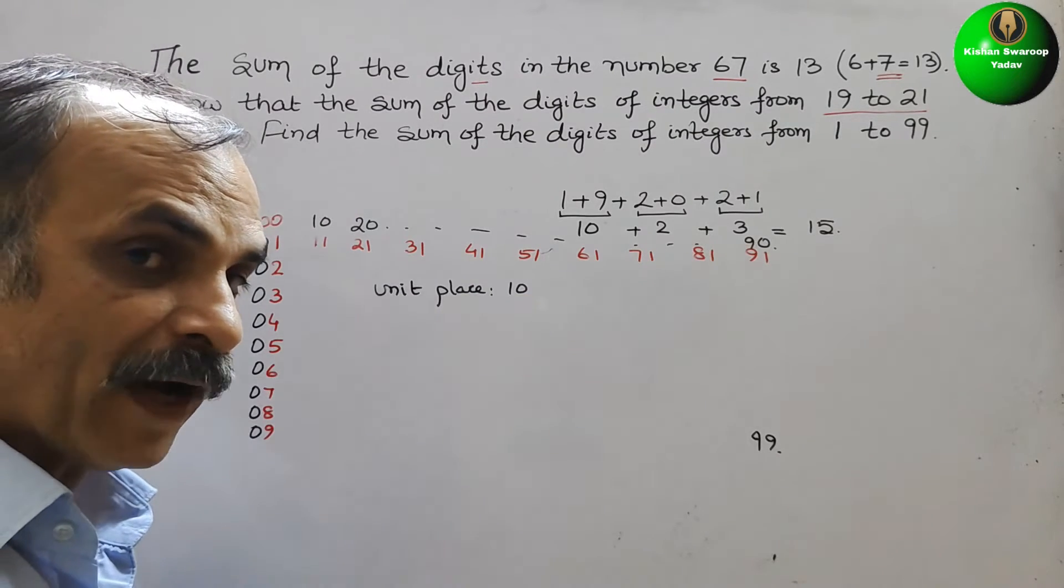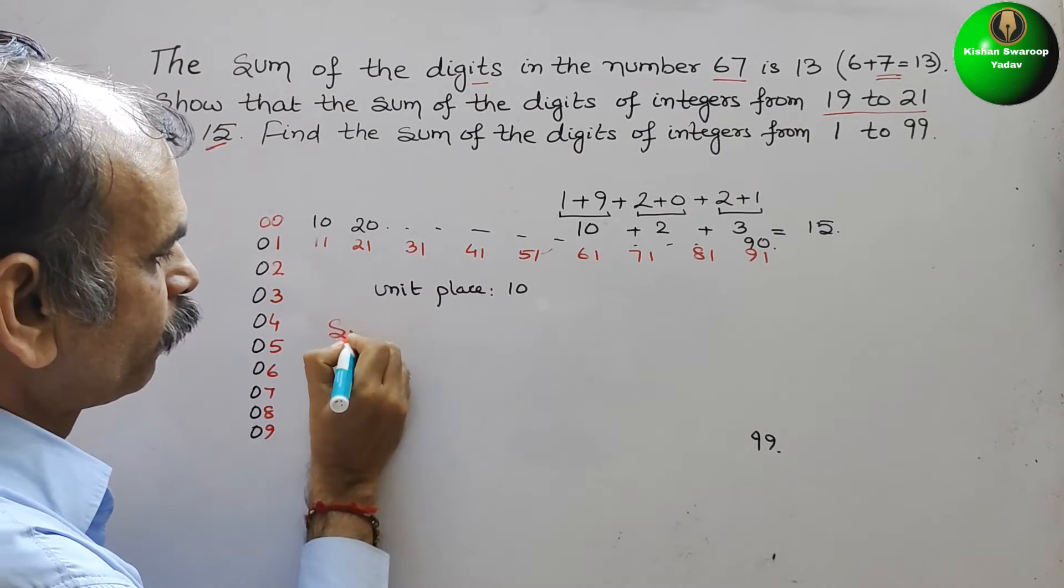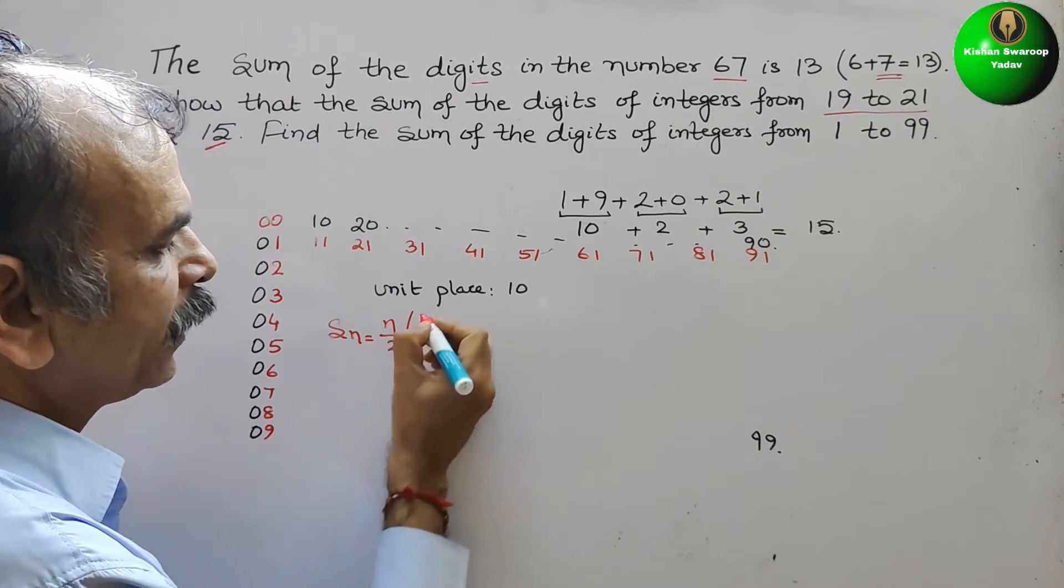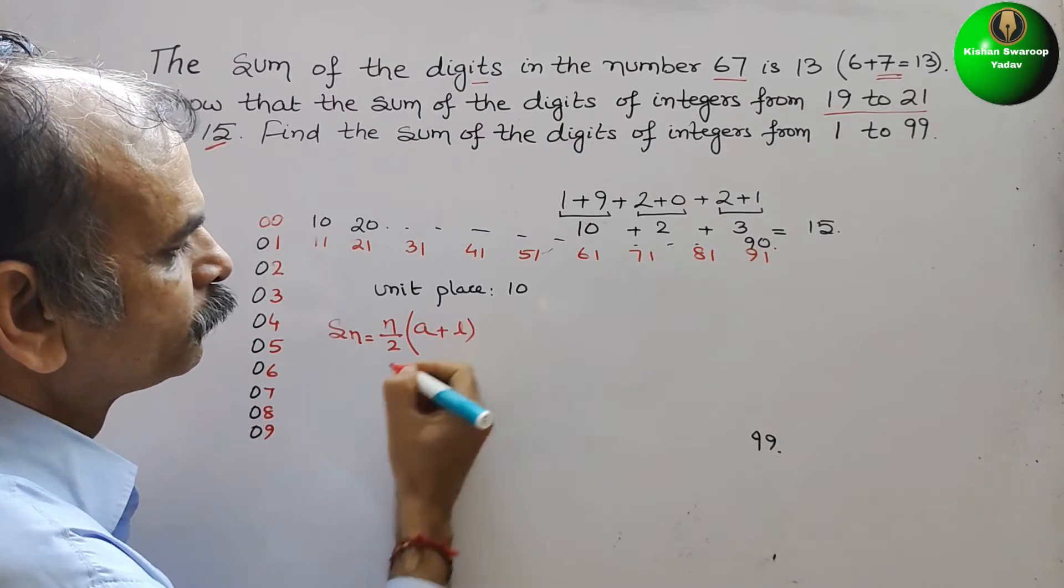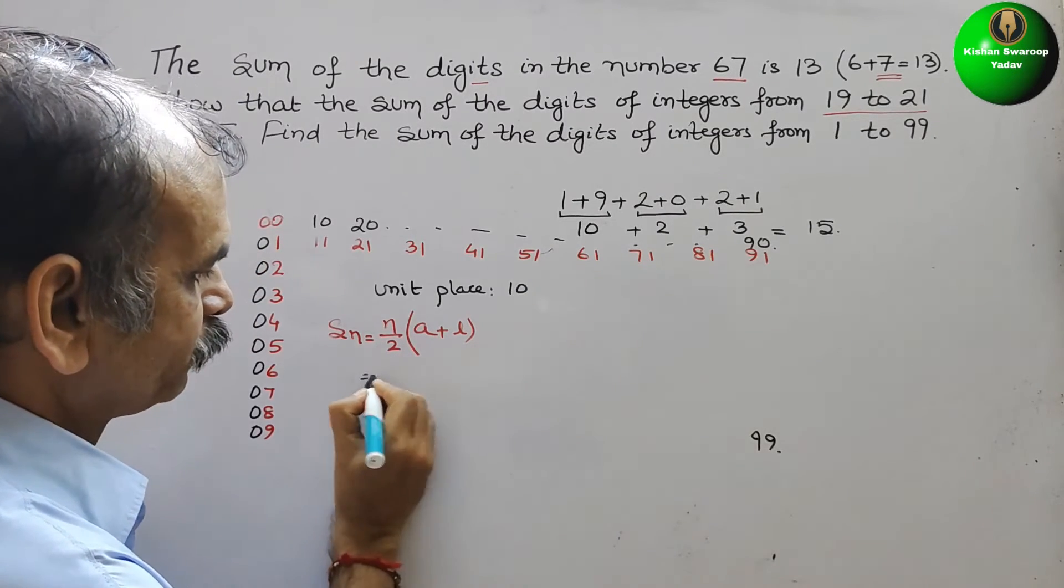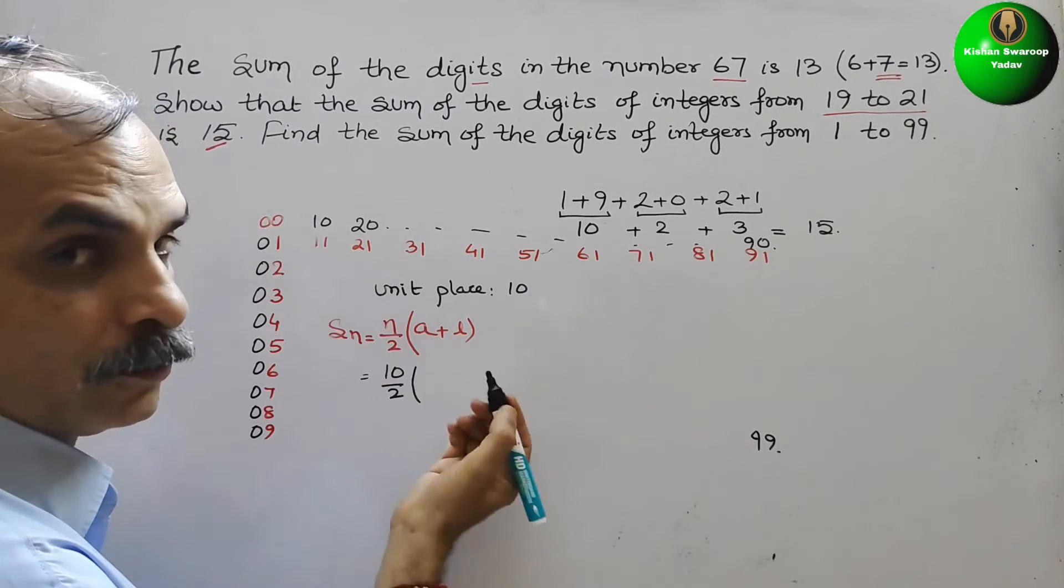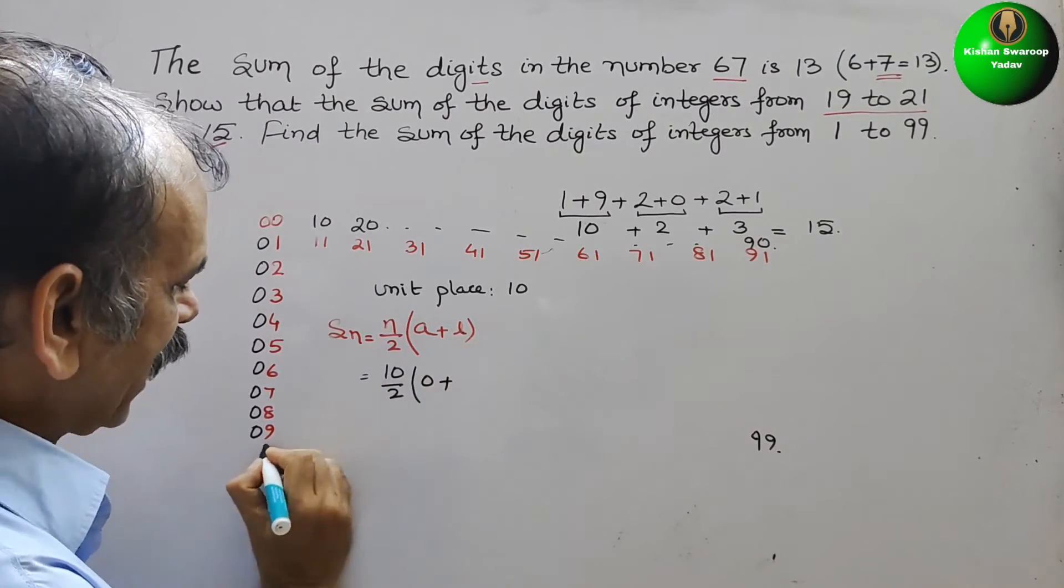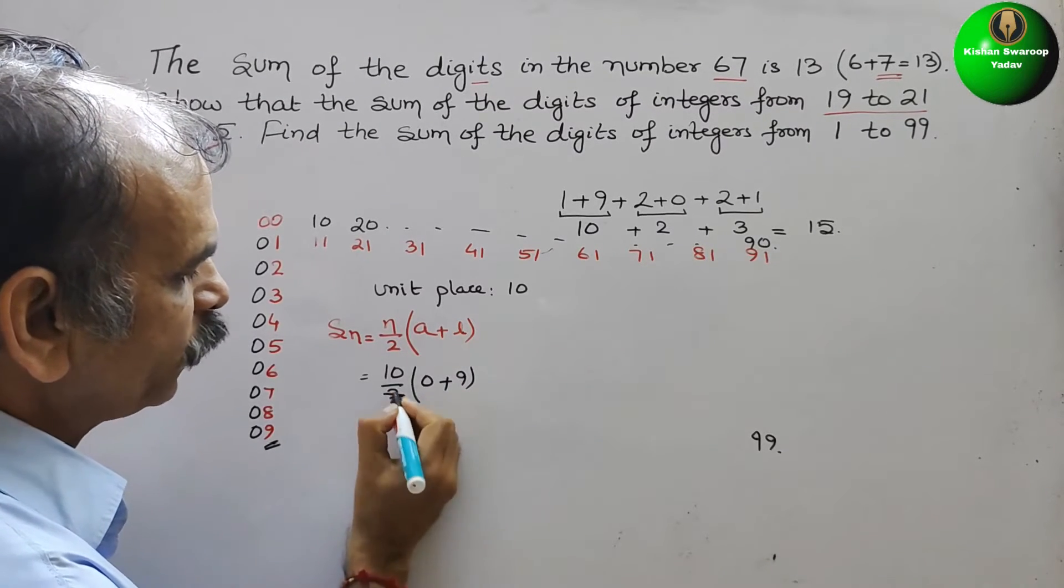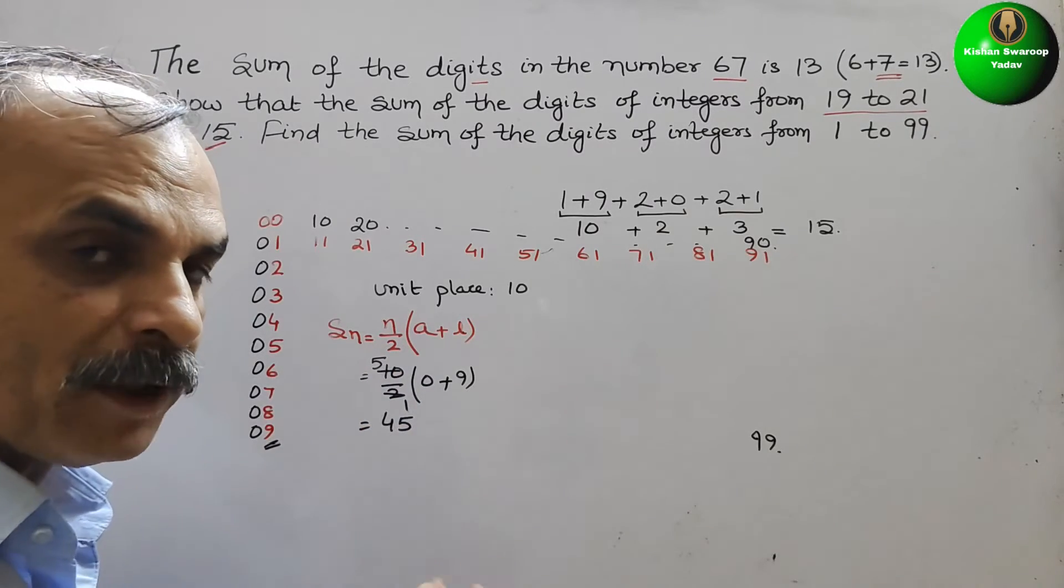So we will find out the sum formula. What is that? Sn is equal to n by 2 times a plus l. So now substitute the value, here comes 10. 10 by 2, a is 0 plus l is 9. So now reduce them, it will be 5, so it will be 45. The sum is 45.